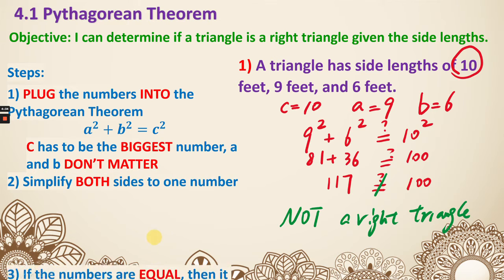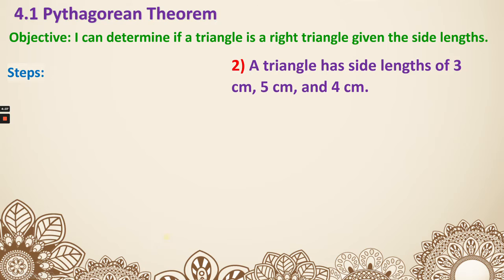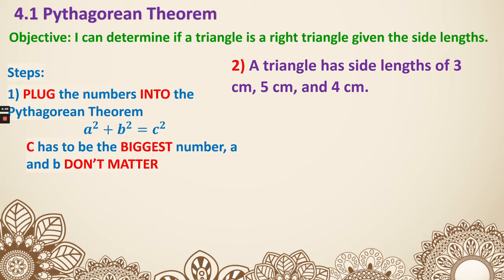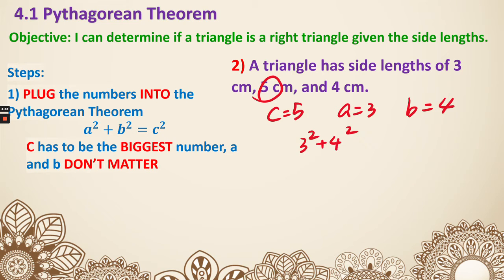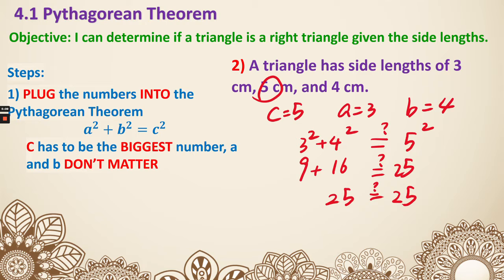Now let's look at another example — same steps. We identify the longest side first. C is always the longest side, which in this case is 5. C is 5. A is 3 and B is 4. Now I put it in: 3 squared plus 4 squared on the left side, and 5 squared on the right side. 3 squared is 9, 4 squared is 16, and the right side is 25. 9 plus 16 is clearly 25, which equals 25. So it is a right triangle. That's how we use side lengths to decide.